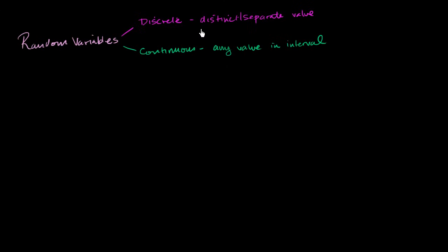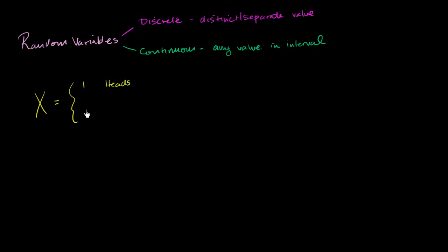With those two definitions out of the way, let's look at some actual random variable definitions and think about whether we would classify them as discrete or continuous. Let's say random variable X equals 1 if my fair coin is heads, and 0 if my fair coin is tails. Is this a discrete or continuous random variable?